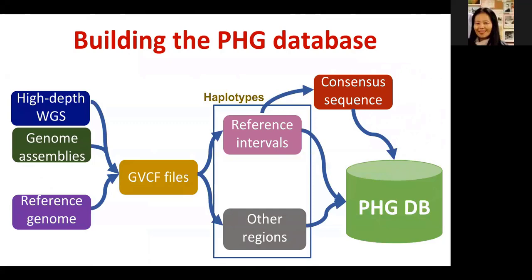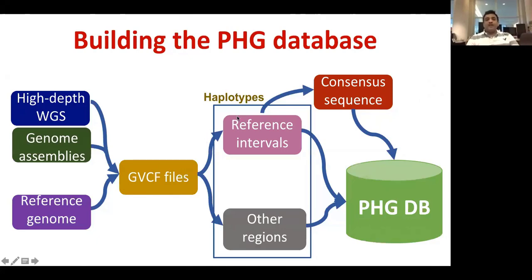To develop a PHG database in any species, we need high-depth whole genome sequencing data or genome assemblies. The system takes either one along with a reference genome and generates GVCFs. GVCFs are then used to generate haplotypes at regular intervals, where the intervals come from reference genome coordinates. We can use any region of interest as an interval and generate haplotypes within that particular interval.